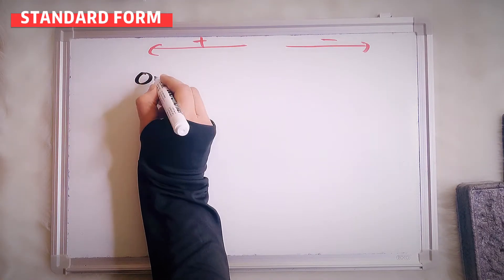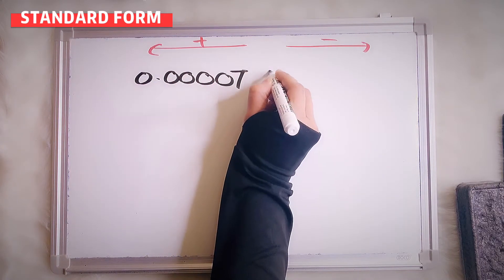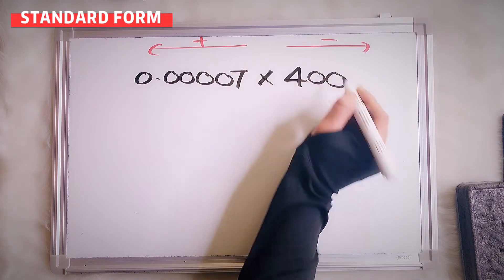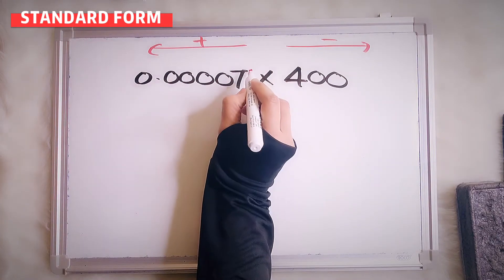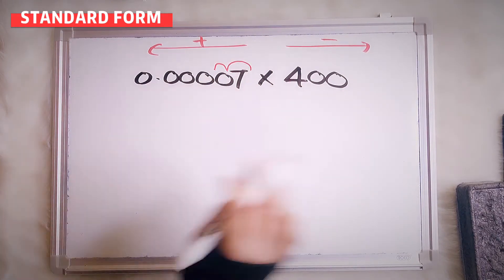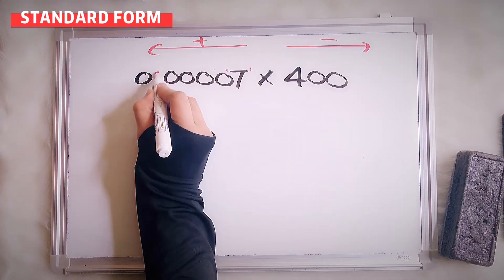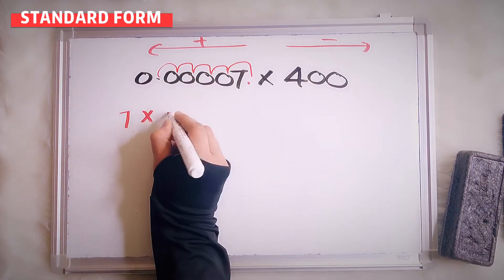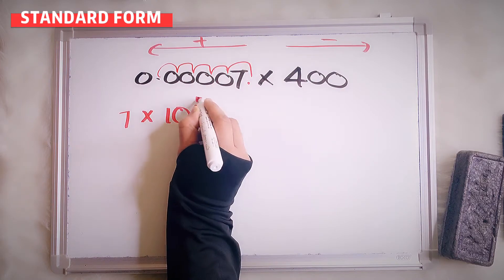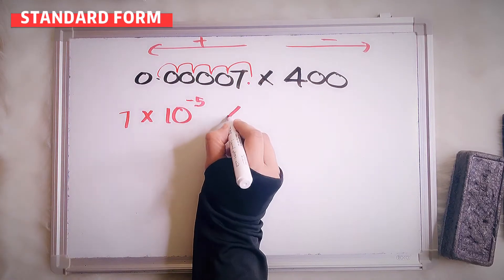Next example: 0.00007 multiplied by 400. Convert to standard form. Because we have a decimal, we have to start from the decimal. Count 1, 2, 3, 4, 5 — so it's 7 times 10 to the power of 5. Since we move to the right side, the sign will be negative.